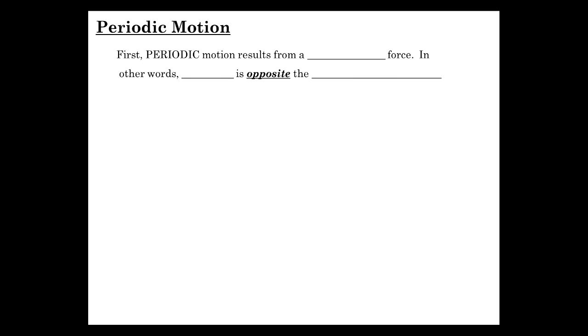Most of you are already familiar with simple harmonic motion, so we're going to just summarize this briefly and get to the equation analysis as fast as we can. Periodic motion — something that repeats itself over a given period — results from a restoring force. The net force is opposite the displacement from the equilibrium position.